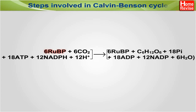6 RUBP + 6 CO₂ + 18 ATPs + 12 NADPH + 12 H⁺ ions gives 6 RUBP + 6 H₂O + 18 Pi (inorganic phosphate) + 18 ADP + 12 NADP⁺ + 6 H₂O.